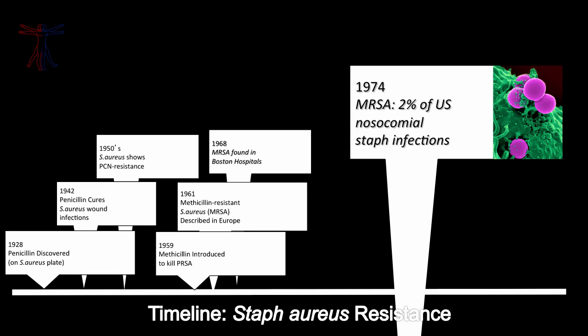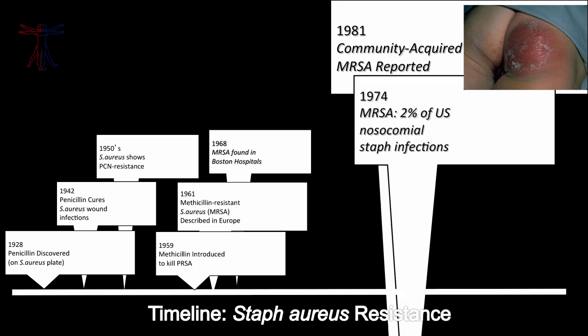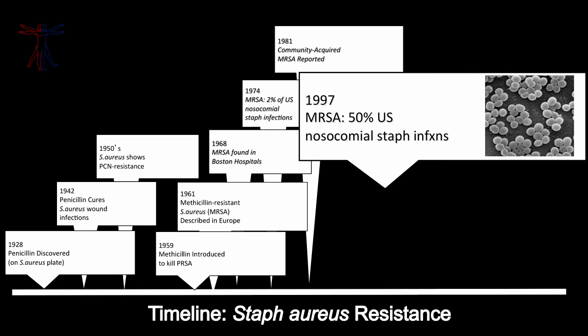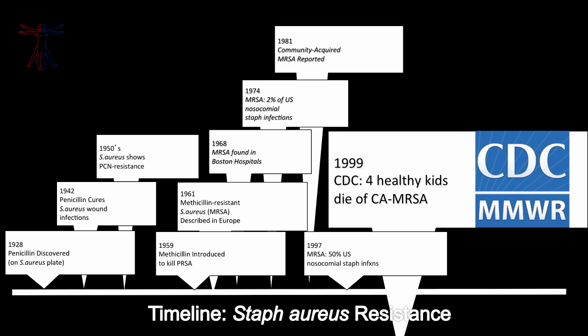For quite some time, MRSA was an oddity — fewer than about 2% of hospital-acquired nosocomial staphylococcal infections were MRSA. Something changed in the early 1980s. Unlike prior strains of MRSA, there were reports of patients in the community without healthcare exposure who were developing infections with MRSA. They were genetically different and tended to present with skin and soft tissue infections such as abscesses, boils, and pus in the skin — and intriguingly, they had not been in the hospital. By 1997, the cat was out of the bag: hospital-acquired strains were now 50% MRSA, and community-acquired MRSA was gaining predominance in the United States.